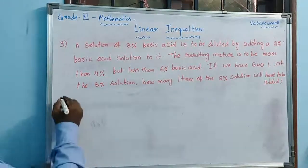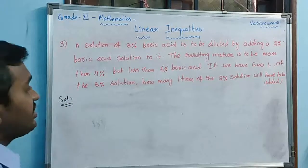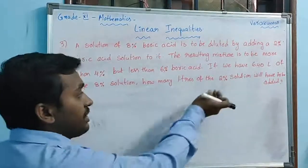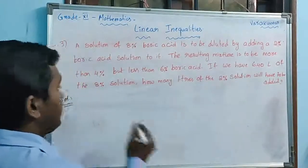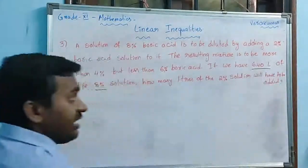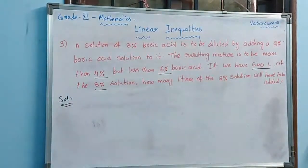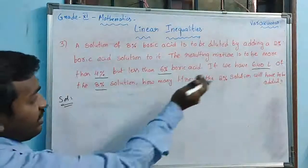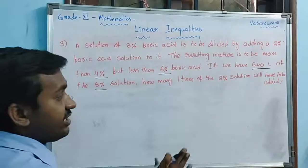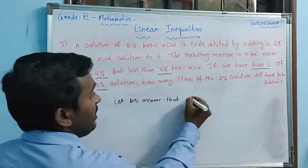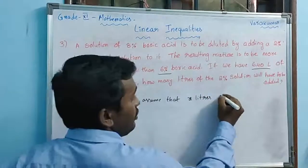What is this trying to say? It is asking how many liters of the 2% solution to add. So, if you add x liters of 2% solution to the 8% of 640 liters, then the resulting mixture will be more than 4% but less than 6%. Given: 640 liters at 8%. We need to find x liters. Let us take x liters of 2% solution.